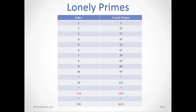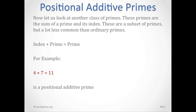I tabulate them again — there's no way to do that except by tabulation and running the program. You can generate these things: the 1st is 1187 and the 790th is 9619. Positional additive primes are primes generated by adding the index to itself. If the result is prime, it qualifies. For example, the 4th prime is 7, and 4 plus 7 equals 11 — so that's a positional additive prime.